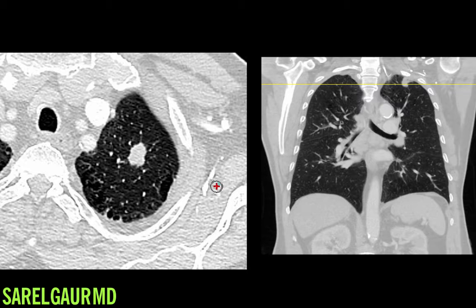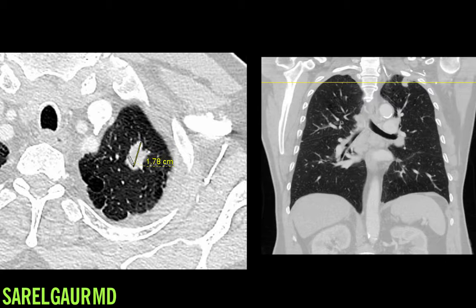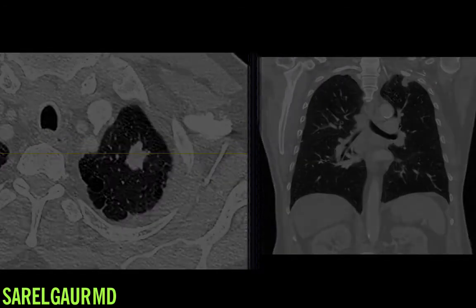The patient doesn't have any prior CTs. I'm going to go ahead and measure the nodule. This nodule measures two centimeters. I know that this nodule could be further characterized by PET CT if indicated. I'm also going to look in the patient's history for any risk factors for lung cancer. It happened to be that this patient had 40 pack-years of smoking. So in my mind, there's a high probability that this nodule represents cancer.